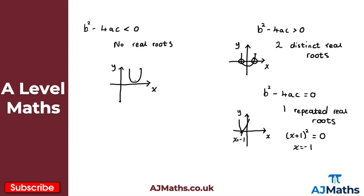If you go on to do A-level Further Maths, you will encounter this again, and a number system called complex numbers is introduced to handle solutions in this case. For standard A-level Maths, you don't need to worry about it — all that happens is the square root would be of a negative number, so we can't find any real roots.